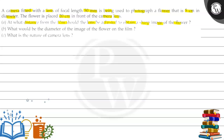Second question: what would be the diameter of the image of the flower on the film? And the third one: what is the nature of the camera lens? So let's simplify this.